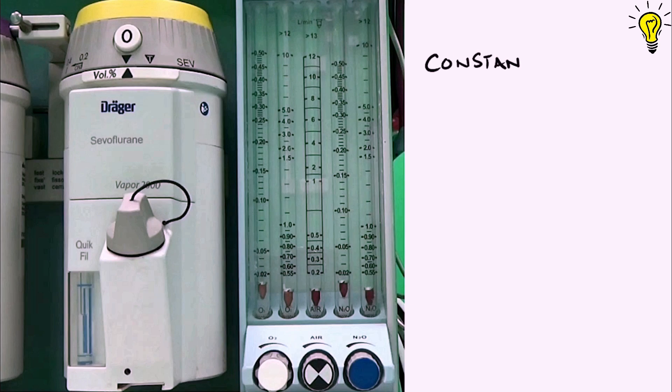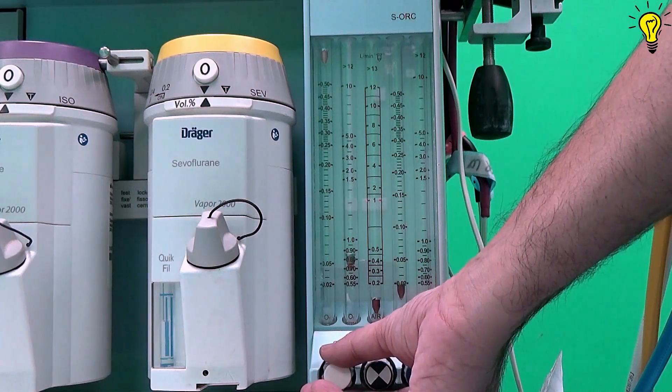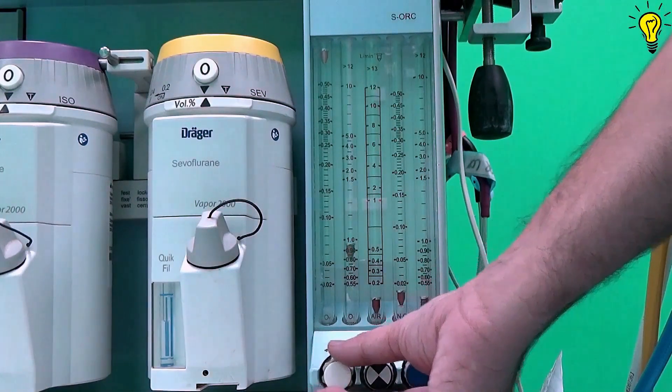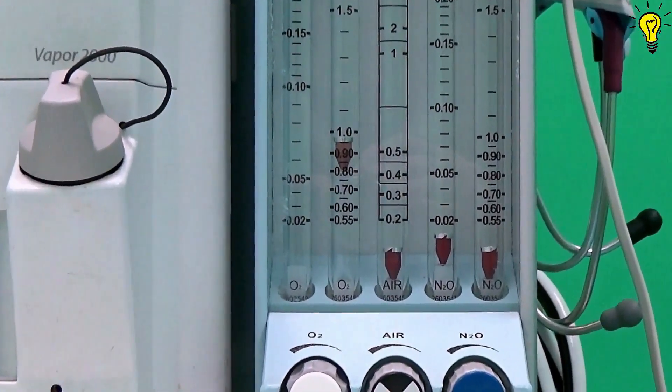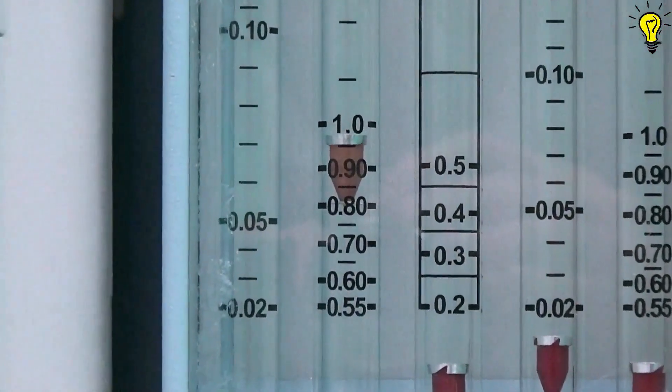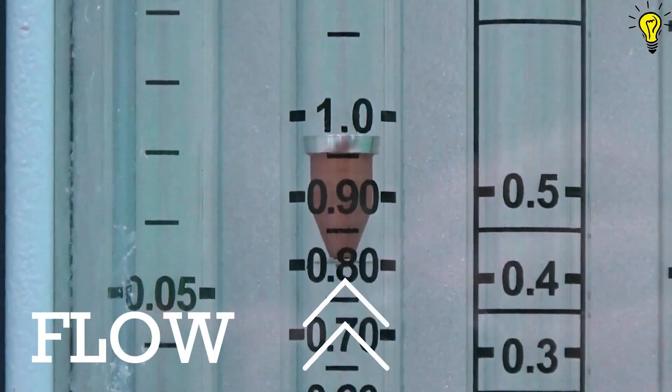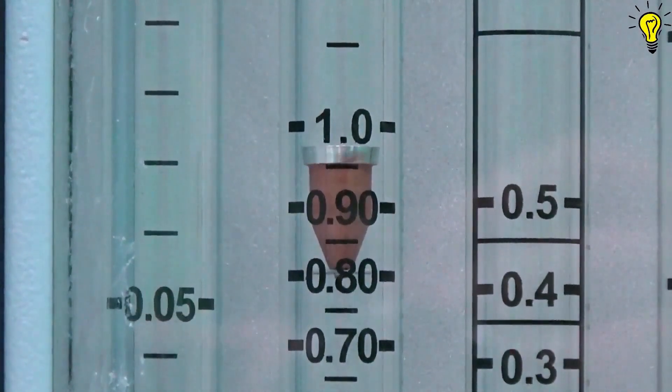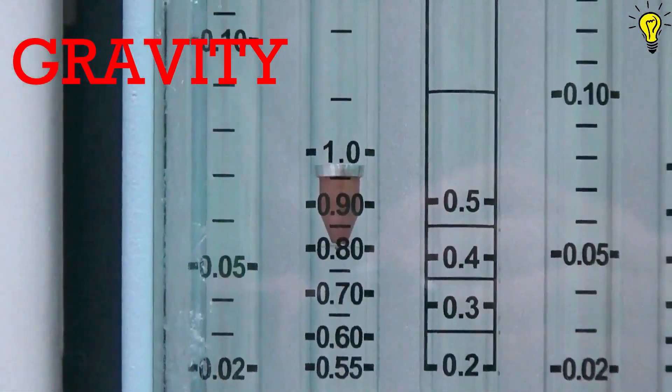Now the second component of flow meter assembly is the rotometer or constant pressure variable orifice flow meter. What do you mean by constant pressure and variable orifice? Let's rotate the knob counterclockwise and open the flow of oxygen. Now you can see the float hanging in the space perfectly in equilibrium at 1 liter per minute flow. So what's keeping this float hanging mid-air? The balance between two forces. The flow is moving the float upwards while the gravity is pulling it downwards. So the float hangs wherever the two opposing forces balance each other out.